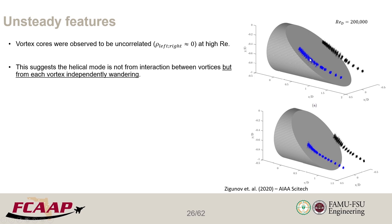Another interesting finding: if we look at the correlation coefficient between the x coordinate of the left-hand vortex and the coordinates of the right-hand vortex and all possible combinations, the correlation coefficients are pretty close to zero — less than 0.2 at high Reynolds numbers such as 200,000. This is a fairly good indication that vortex wandering at high Reynolds numbers is related to each vortex independently wandering, not a mode where the two vortices wander together. This was observed from a wider PIV window capturing both vortices.